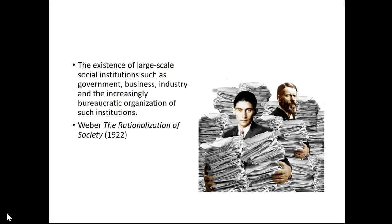Another dimension of modernity is bureaucratization — the existence of large-scale social institutions such as government, business, and industry, and their bureaucratic organization. Max Weber, writing just under a hundred years ago, looked at how society had become increasingly bureaucratized, with a lack of the human touch in the interaction between the state and its people. Kafka, in fictional form, explored the implications of bureaucratization on ordinary people.